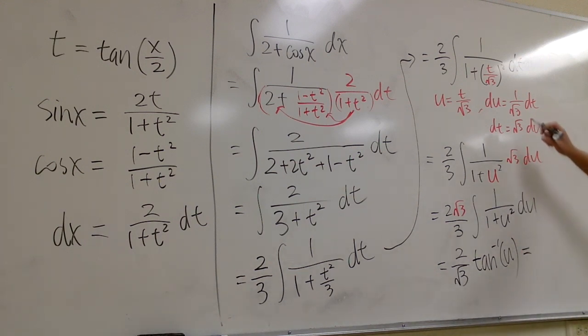let's go back to the t world first. For u, it's the down, right? t over square root of 3. So, we have 2 over square root of 3, inverse tangent of t over square root of 3, right?